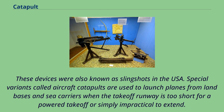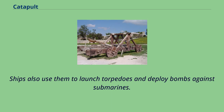Special variants called aircraft catapults are used to launch planes from land bases and sea carriers when the takeoff runway is too short for a powered takeoff or simply impractical to extend. Ships also use them to launch torpedoes and deploy bombs against submarines.